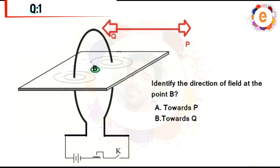First, identify the direction of the magnetic field at point B. The circuit goes from A towards B, and B towards Q. In that circuit, we have a loop on the left. This loop will create a current path, and the loop on the right will also be created, producing a magnetic field.